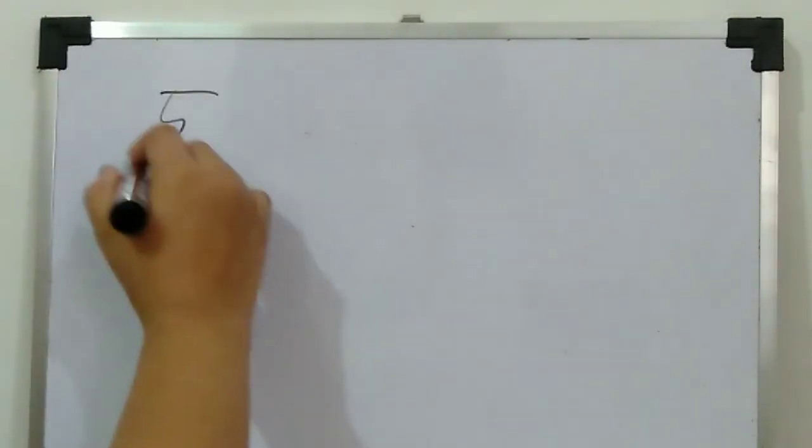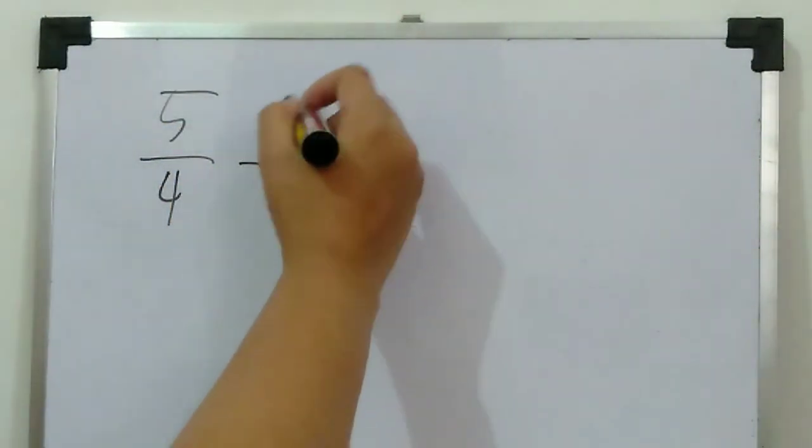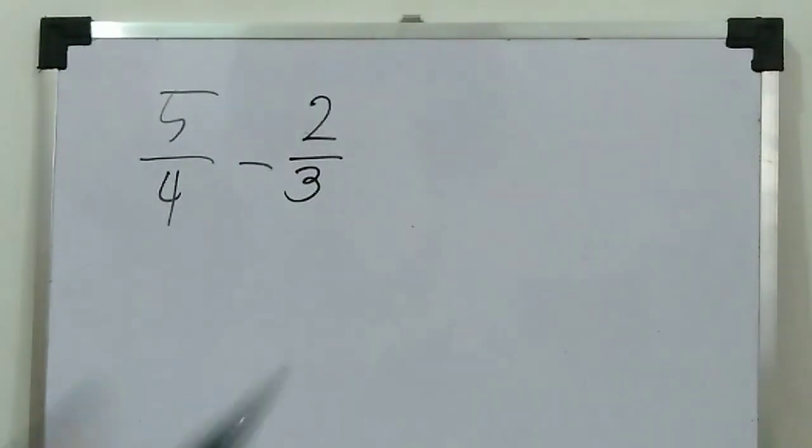Now, let's move on to how to solve subtracting dissimilar fractions. We have five-fourths minus two-thirds. I will teach you how to solve this to make it faster or easier to remember.